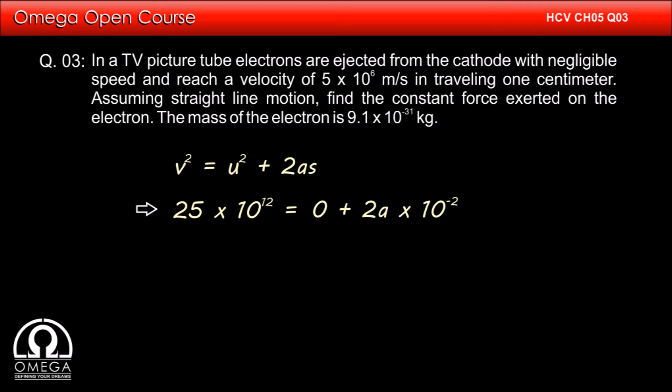We get 25 × 10^12 = 0 + 2a × 10^-2, which implies a = 25/2 × 10^14 meters per second squared.